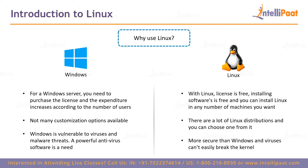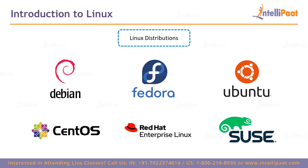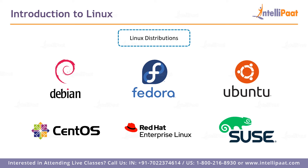Now let us look at the different Linux distributions. There is Debian, Fedora, Ubuntu, CentOS, Red Hat, and SUSE, among many others. CentOS is the operating system we are going to use throughout this Linux course. CentOS is basically the community version of Red Hat Enterprise Linux and has all the features of any other Linux distribution. There is also Kali Linux and many other varieties, each better suited for specific purposes.